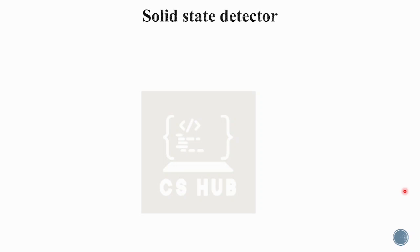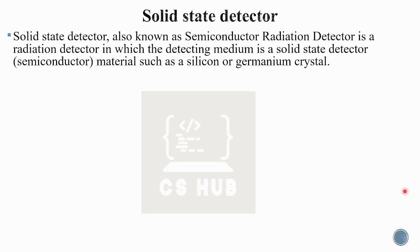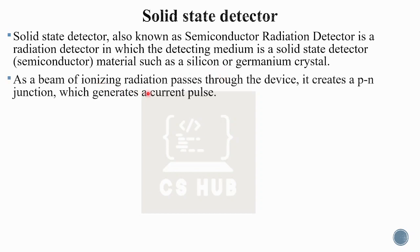The solid-state detector, also known as the semiconductor radiation detector, is a radiation detector in which the detecting medium is a solid-state material such as silicon or germanium crystal. As a beam of ionizing radiation passes through the device, it creates a PN junction which generates a current pulse.